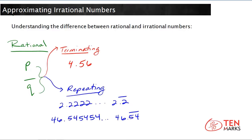The first type of decimal is called a terminating decimal. In a terminating decimal, the digits after the decimal point have a definitive end — they don't continue on forever. Here's an example of a terminating decimal: 4.56. After the sixth, there are no more digits.